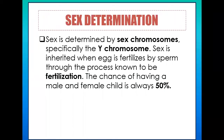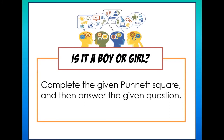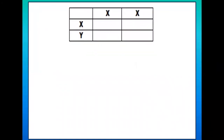To check your understanding, let's have this activity titled 'Is It a Boy or Girl?' The direction is: complete the given Punnett square and then answer the given questions. We have to cross a male parent to a female parent using the chromosomes XY and XX. Let's go ahead and work through the Punnett square.